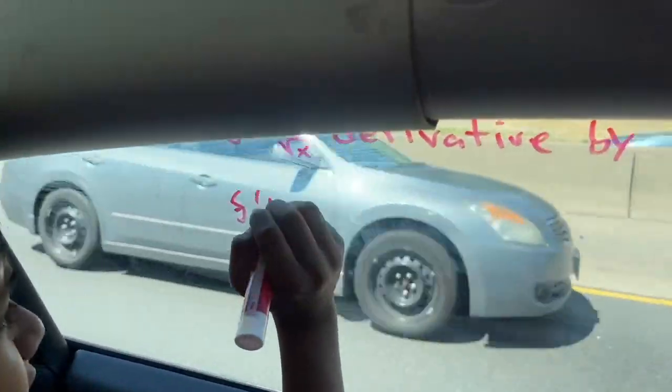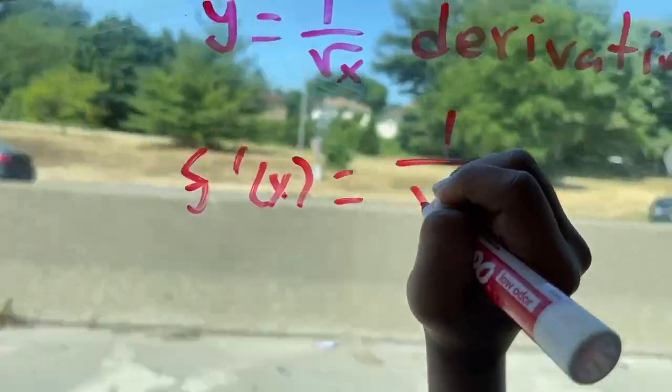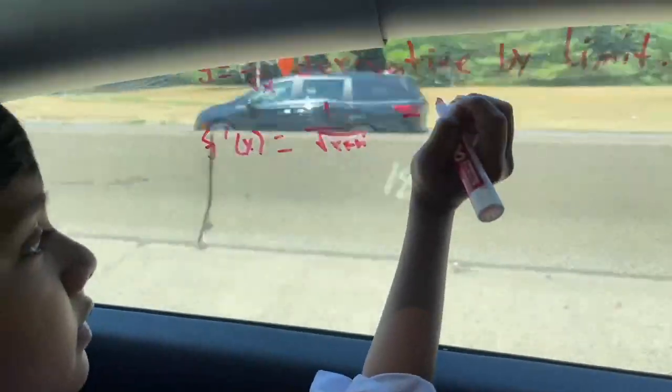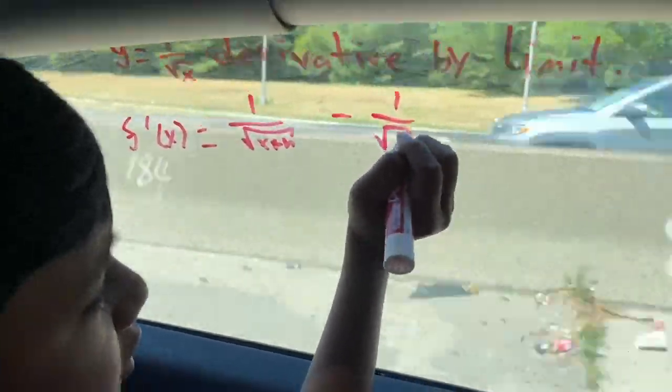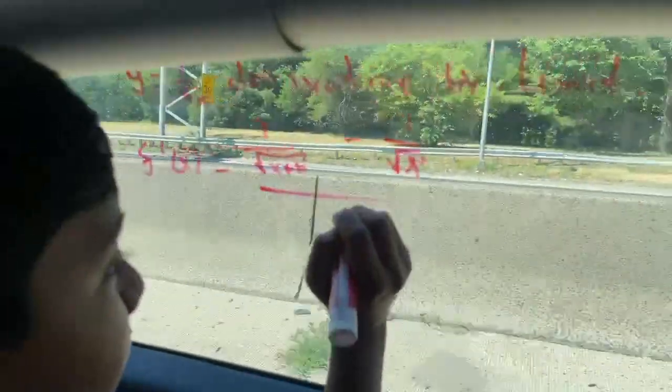Alright. f prime of x, which has got to be 1 over the square root of x plus h, then 1 minus the square root of x over h.